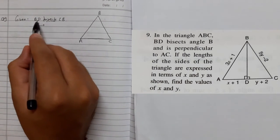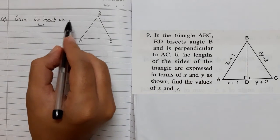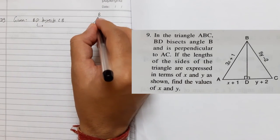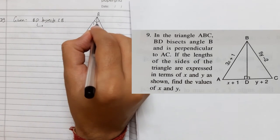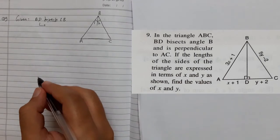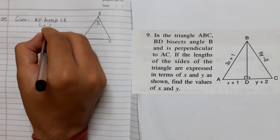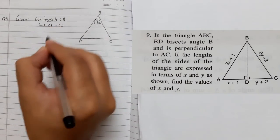BD bisects angle B, that means BD is bisecting angle B. So there is a line BD. That means this angle has been divided into two parts and those two parts are equal. So I can say angle 1 is equal to angle 2.